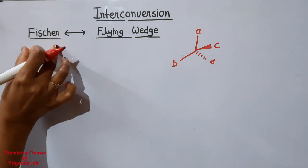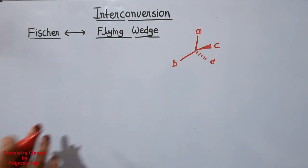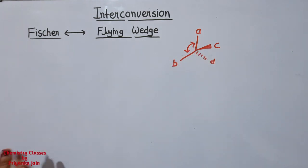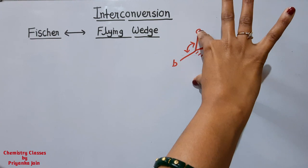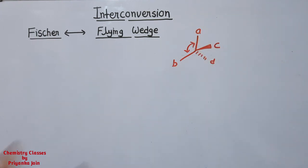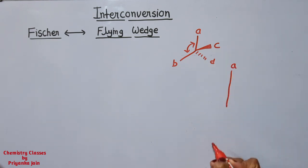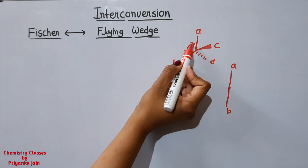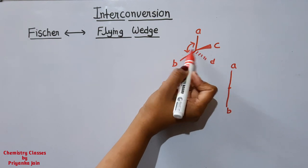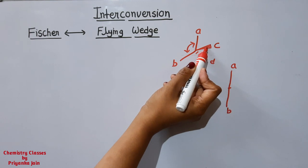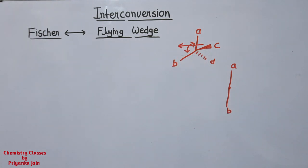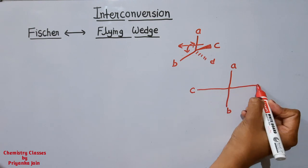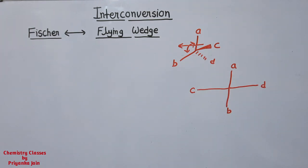To convert flying wedge to Fischer projection: first, stretch the two in-plane bonds vertically so that one group goes above and one goes below. This creates a cavity on one side. The group that was above the plane (wedge) goes on the side of the cavity, and the group that was below the plane (dash) goes on the other side. This gives us the Fischer projection.